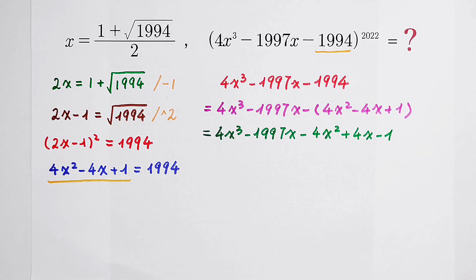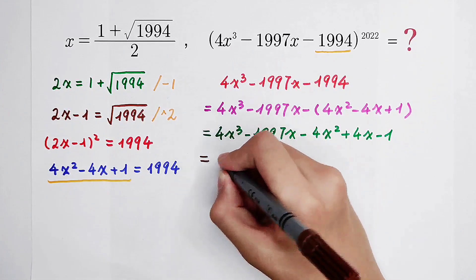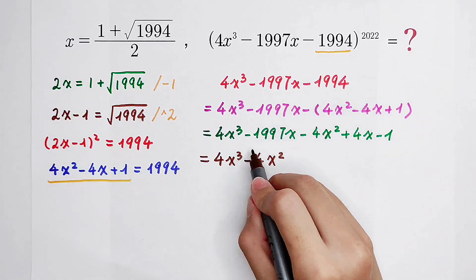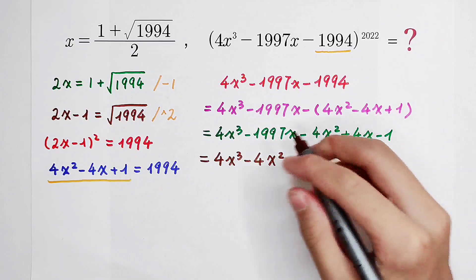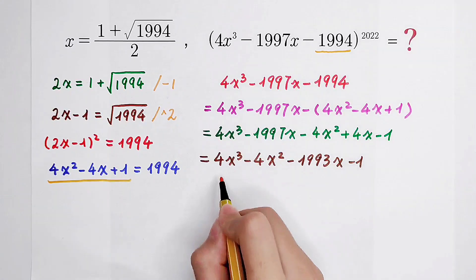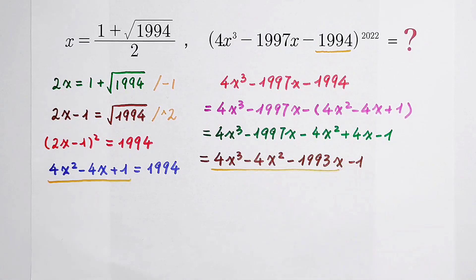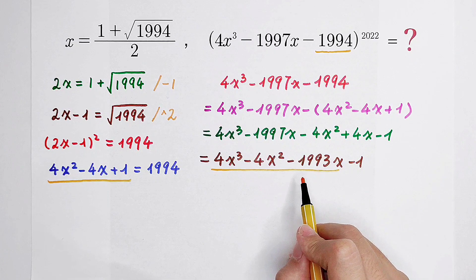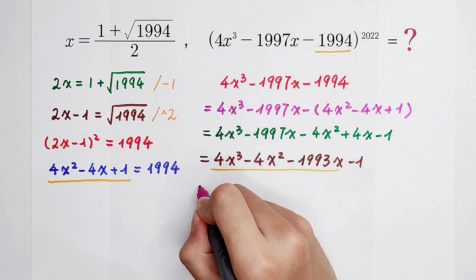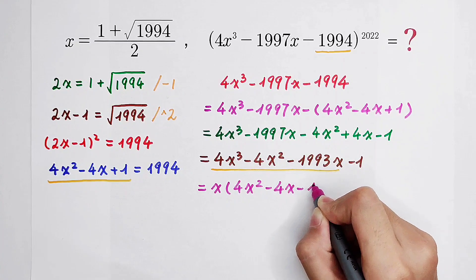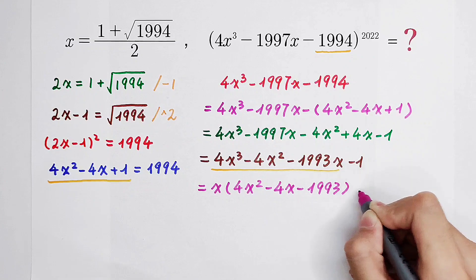Then, what should we do? Yes, continue doing it. This is 4 times x cubed, minus 4 times x squared, minus 1997x, then plus 4x — that is minus 1993x — then minus 1. Pay attention: these three terms all have a same factor, that is x. So take it out: x times (4x squared, minus 4x, minus 1993), then minus 1.